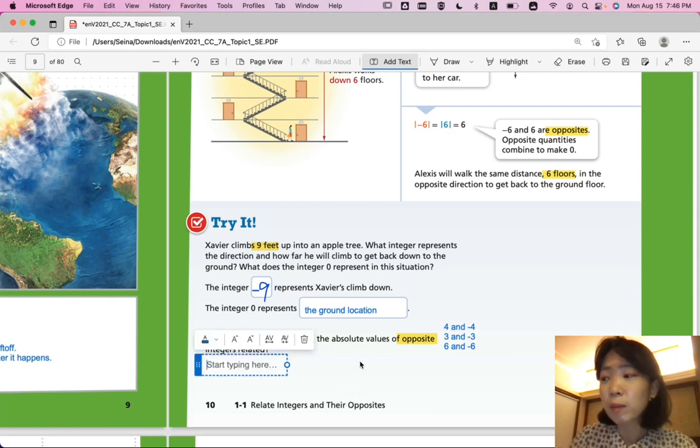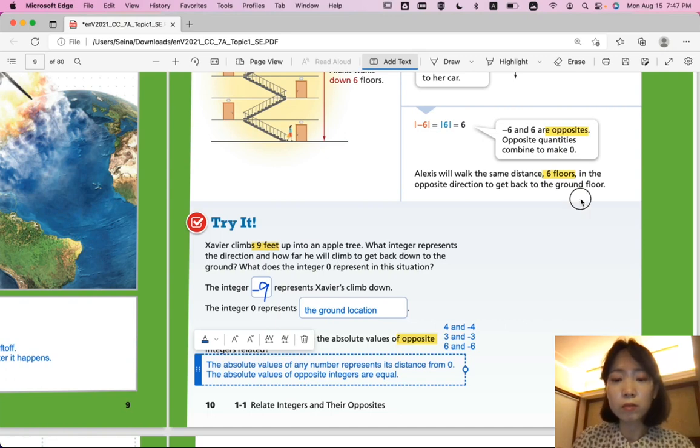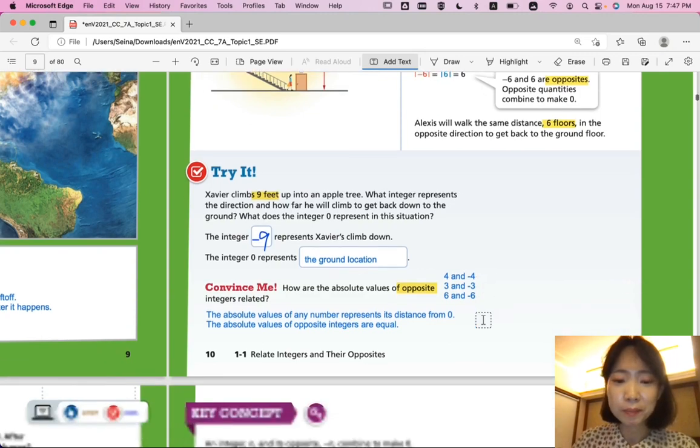How are they related with the absolute values? The absolute value always makes the number positive because it's talking about the distance from zero. It's talking about the distance. And distance is always positive. So the opposite values of the opposite integers are always equal. The absolute values of any number represents its distance from zero. So the absolute values of opposite integers are equal. Because whether positive or negative, the directions might be different, but the distance from zero would be the same.